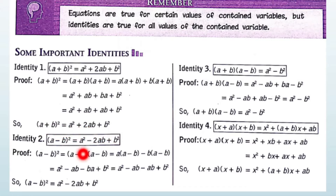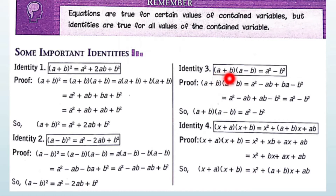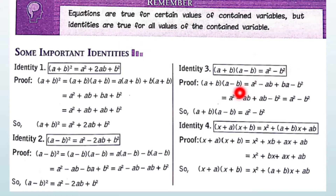In the same manner, Identity 2 is given: (A - B) whole square equals to A square minus 2AB plus B square. And in Identity 3, (A + B)(A - B) equals to A square minus B square. When the signs are different, the result is A square minus B square.